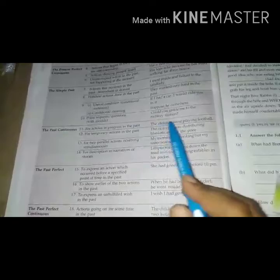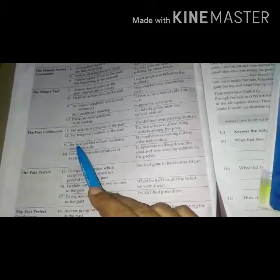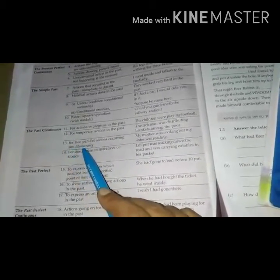The past continuous: For actions in progress in the past - The children were playing football. Number 12, for temporary actions in the past: The rich man was distributing blankets among the poor. For two parallel actions occurring simultaneously: My mother was cooking, but my sister was reading. Fourteen, for description in narratives or stories. For example: Lilliput was walking down the road and was carrying edibles in his packet.